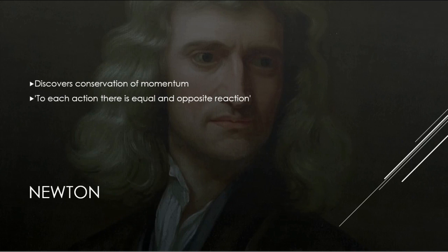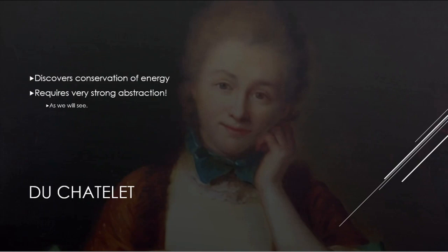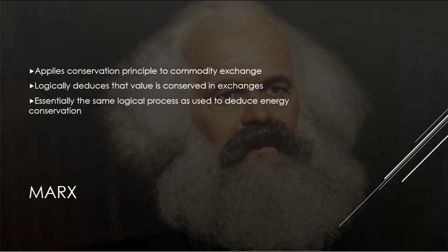Newton realized that momentum was conserved, but he didn't have a concept of energy. The discovery of the concept of energy is due to Duchatelet, who was the translator of Newton into French. To uncover the concept of energy required her to use very strong levels of abstraction — similar forms of abstraction to those that Marx uses in Capital, where he applies the conservation principle to commodity exchange and logically deduces that value is conserved in exchanges, using essentially the same logical process as was used in mechanics to deduce that energy existed.